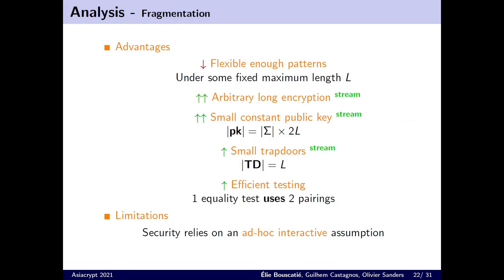This way, the AsiaCrypt 2020 paper manages to remove at once all the limitations of the encryption of streams. Here, L is the maximum pattern length. But the public key depends on the size of the alphabet, which is 2 to the 8th in the IDS applications, and the security still relies on the same strong assumption.